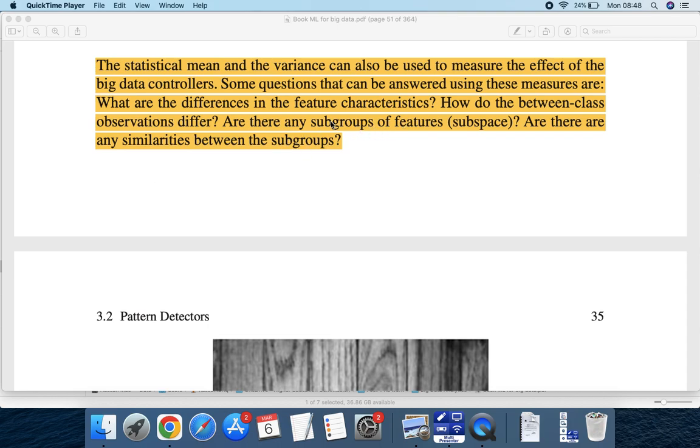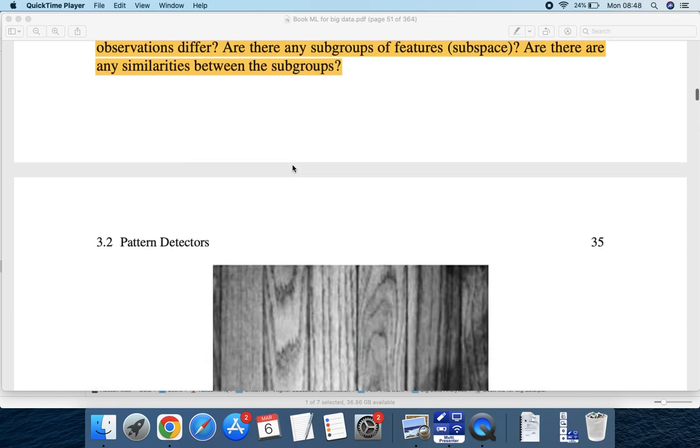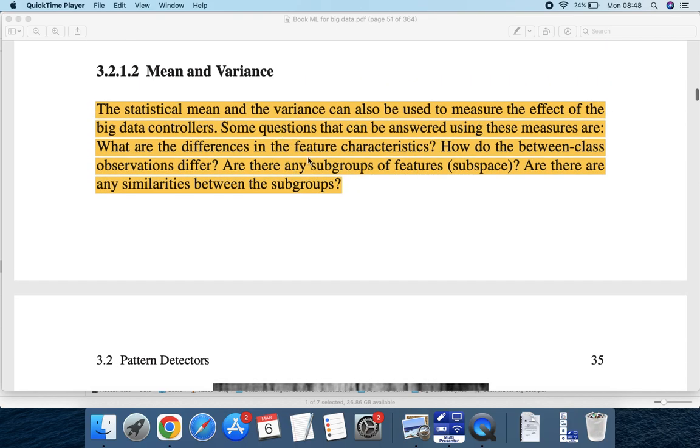Are there any subgroups or features or is there any subspace available? Are there any similarities between the subgroups? So these are some differences between mean and variance. And variance, by the way, is calculated on the basis of mean. First you have to calculate mean, then you calculate variance.